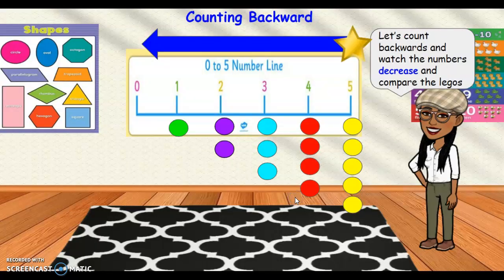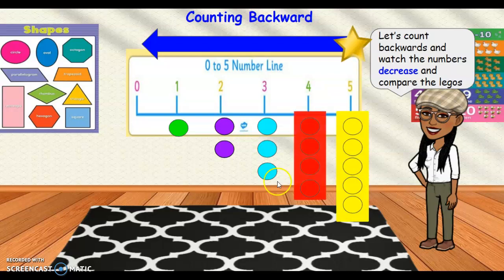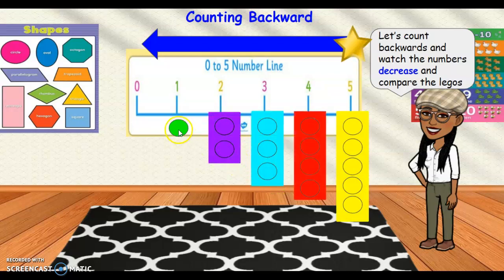Alright, so let's start with what we know. Let's count backwards, starting from the number 5, and watch the numbers decrease, then we'll compare the Legos. Ready? Let's do it. 5, 4, 3, 2, 1, and 0.